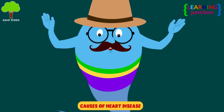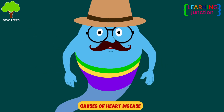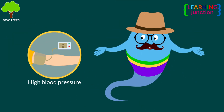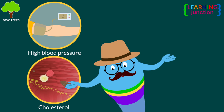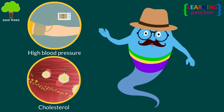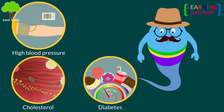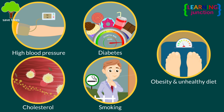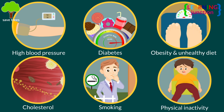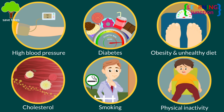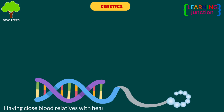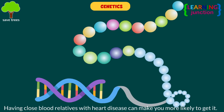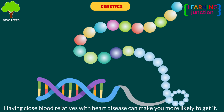The causes of heart disease depend on the type of disease. Some general causes include high blood pressure, high low density lipoprotein cholesterol, diabetes, smoking and smoking exposure, obesity and unhealthy diet, and physical inactivity. In addition, having close blood relatives with heart disease can make you more likely to get heart disease.